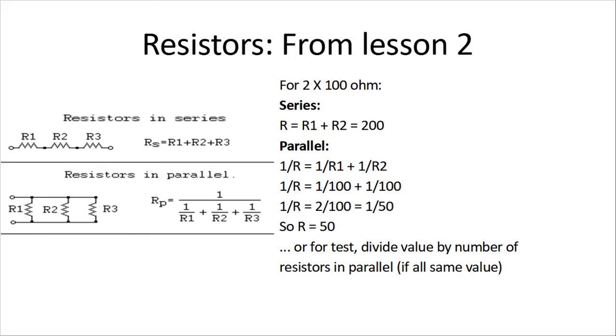So in this case, we have two 100-ohm resistors, so we divide 100 by 2, and our total resistance is 50. If it's three resistors, like in the diagram, and they're all 100 ohms, then our resistance will be 100 divided by 3, or 33.3 ohms. It's a cheat, but it works.